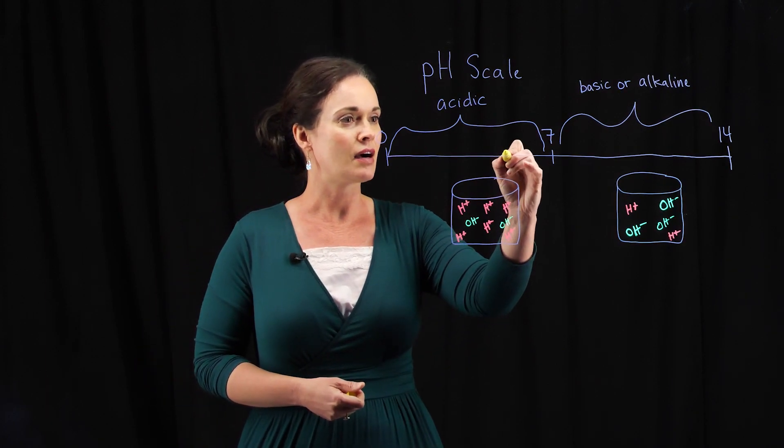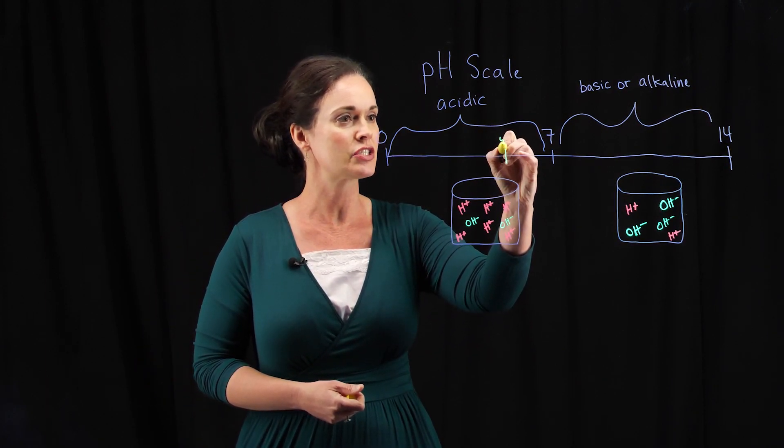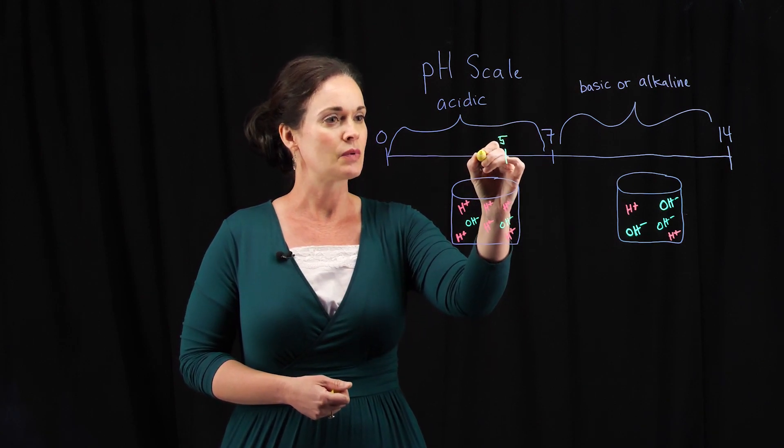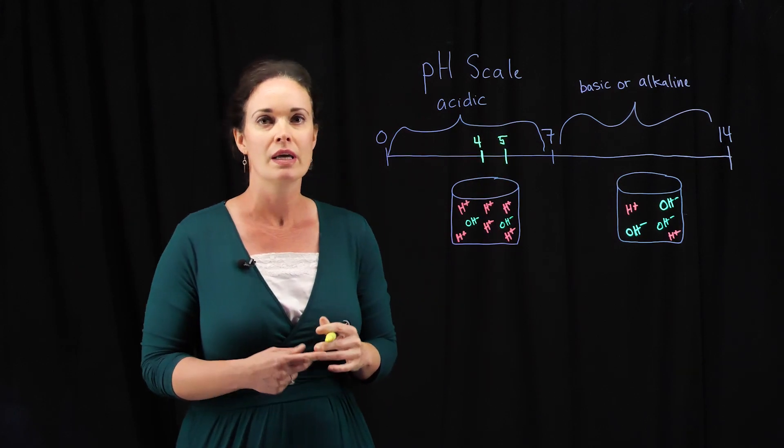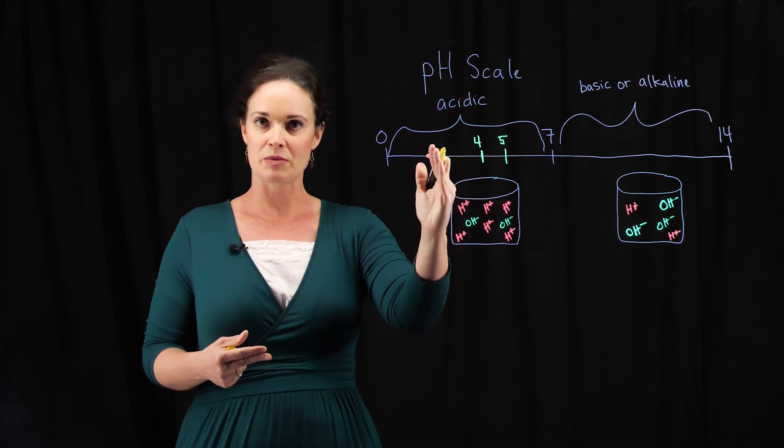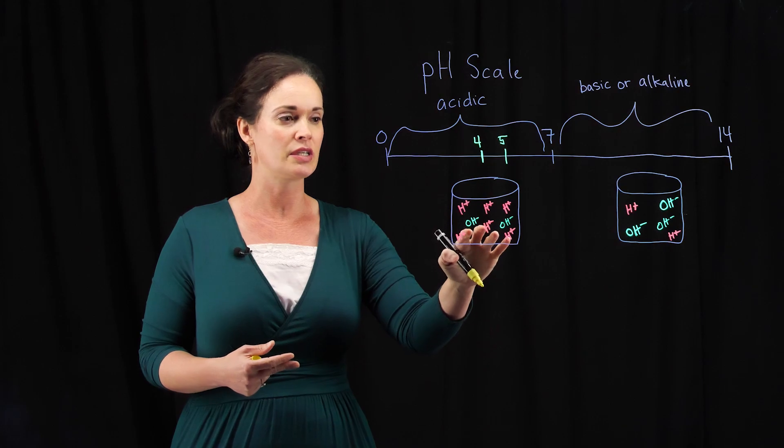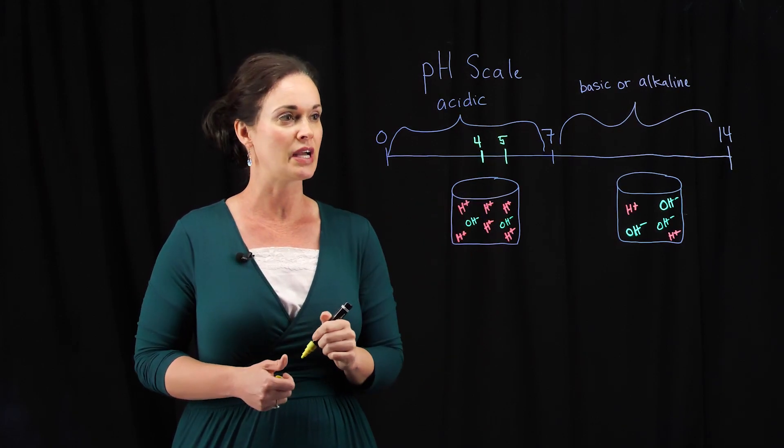Black coffee has a pH of 5, and tomato juice has a pH of 4. What that means, as the pH becomes increasingly lower, is you're getting more and more of the free hydrogen.